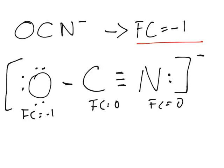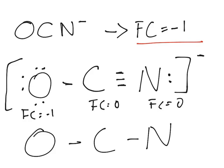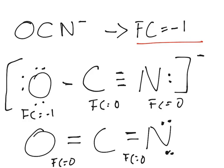Another way to draw oxygen, carbon, nitrogen — we'll make one bond for each. If we have a double-bonded oxygen, that has a formal charge of zero. If we have a double-bonded carbon on two sides, so that means four bonds, that also has a formal charge of zero. And if we leave nitrogen with two lone pairs, then the nitrogen has a formal charge of negative one. So that could also be a structure.